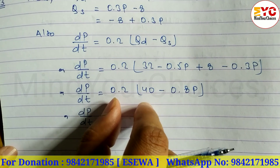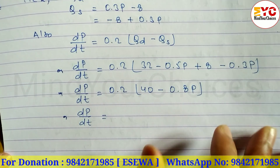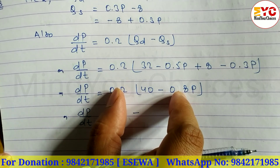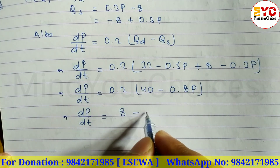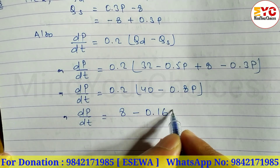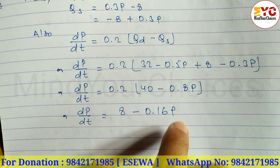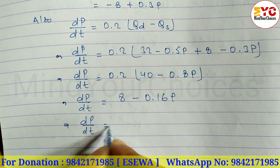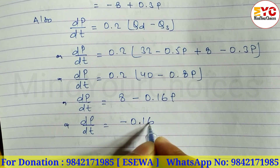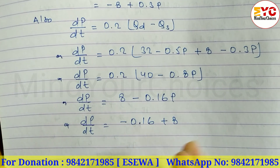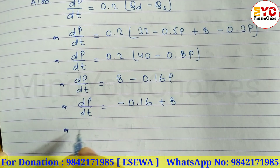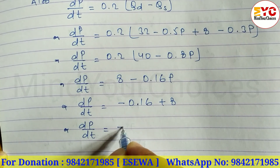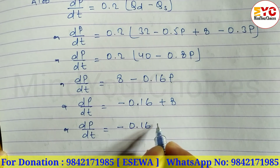Multiplying through: 0.2 × 40 = 8, and 0.2 × 0.8 = 0.16. So dp/dt = 8 − 0.16p, which we rewrite as dp/dt = −0.16p + 8. Taking −0.16 as common factor: dp/dt = −0.16(p − 50).